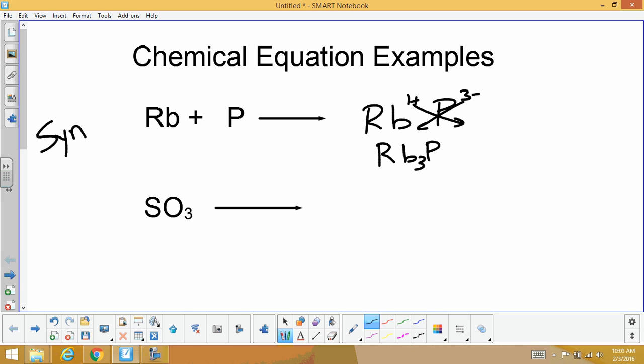And from here, we just balance it. There's three rubidiums here. That means there's three over here. So for this synthesis equation, it ends up being three rubidiums, one phosphorus yields rubidium phosphide. Everything's balanced. That's example number one. Example number two,